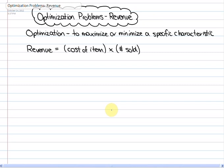Okay, today we're going to be looking at optimization problems having to do with revenue. Again, we looked last time that optimization is to maximize or minimize a specific characteristic. In this case, we're going to be optimizing revenue. Revenue, as we know, is the cost of an item times how many you sell.